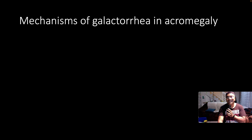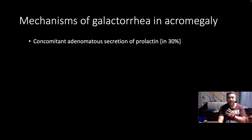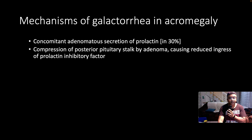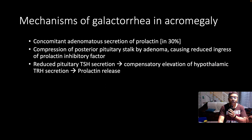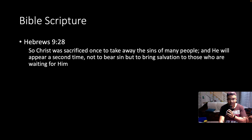What are the mechanisms of galactorrhea in acromegaly? There could be concomitant adenomatous secretion of prolactin in 30% — what we call the somatomammotropinoma. There could be compression of the pituitary stalk by the adenoma, causing reduced ingress of the prolactin-inhibiting factor, which is dopamine. And there could be reduced pituitary TSH secretion, causing a compensatory elevation of hypothalamic TRH secretion, hence driving prolactin release.